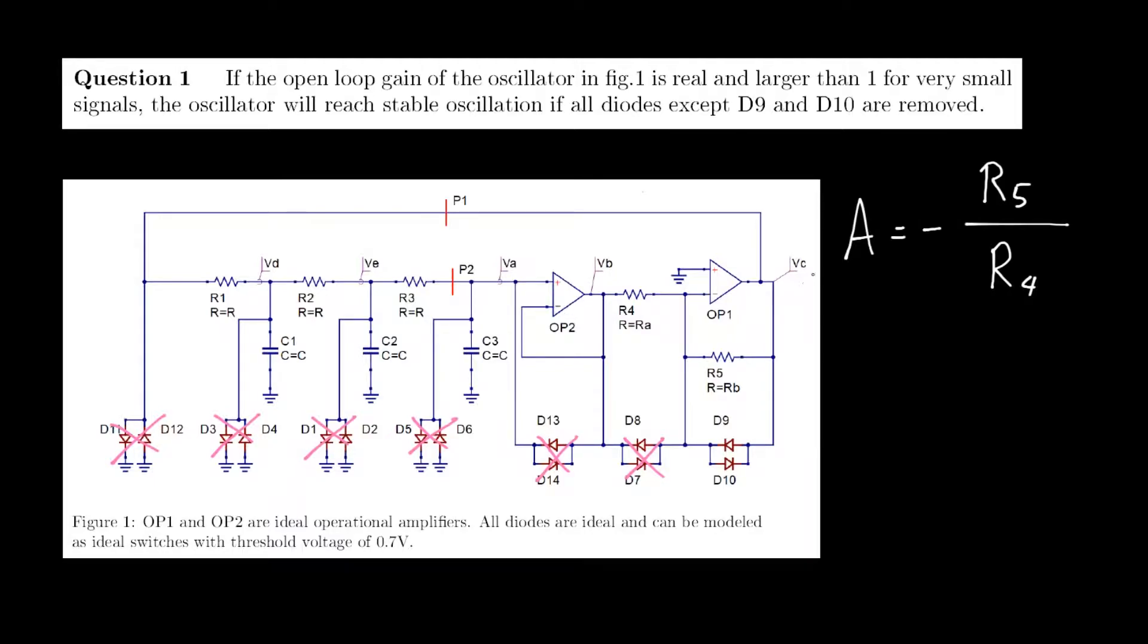If the voltage difference between Vc and this inverting input, which will be ground because the plus terminal is also connected to ground, is larger than the forward voltage of one of these two diodes,